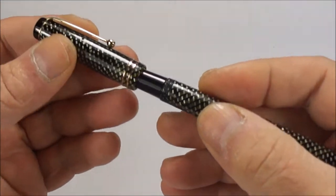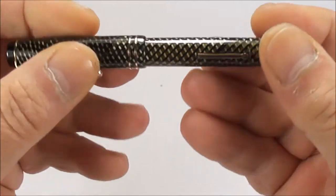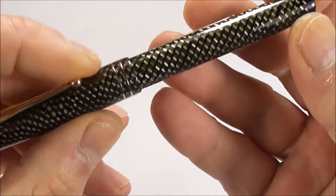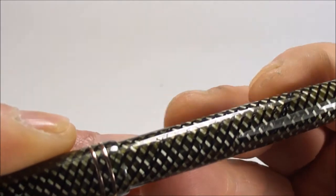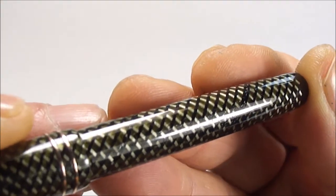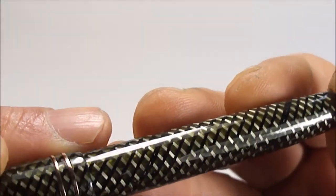So a lovely, a lovely nib to write with. So let's pop the cap back on for you like so. So there we have it, absolutely gorgeous pen. Let's try and show you, I don't know actually, it's difficult for me to see over the camera, I'm trying to find the barrel imprint for you.